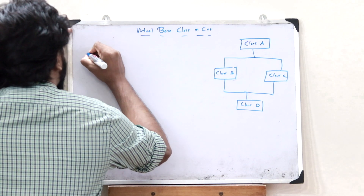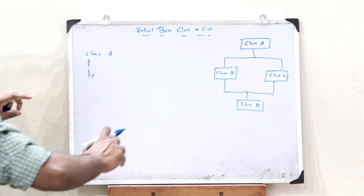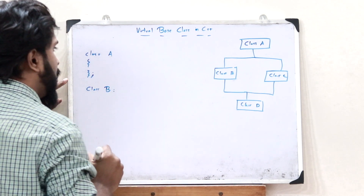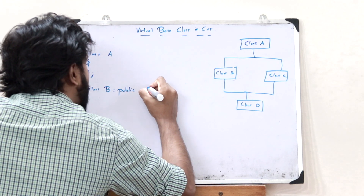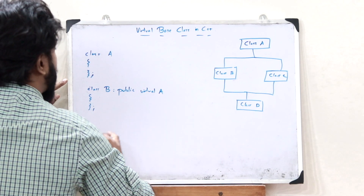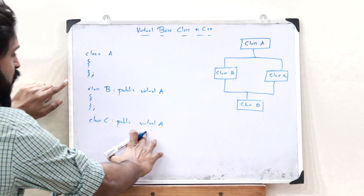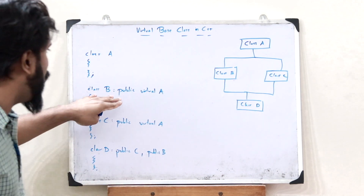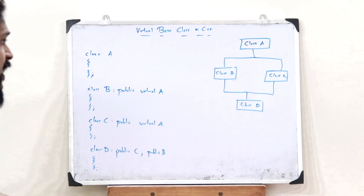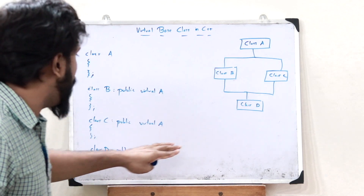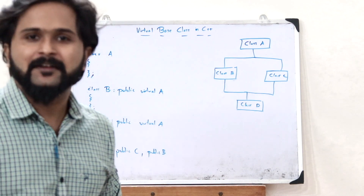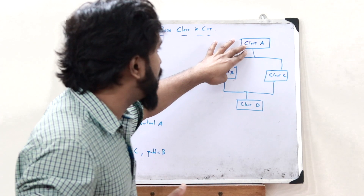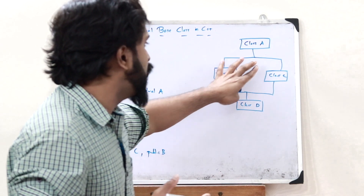Here is how we use a virtual base class. First we have class A. Now we inherit class B and class C from class A. We write class B, give the access mode as public, and then specify virtual class A. This is how we declare a virtual base class. Similarly, class C is also derived from virtual class A. Finally, class D is inherited from both class B and class C. By declaring class A as a virtual base class, we can now access any data members of class A through an object of class D without being thrown an error.